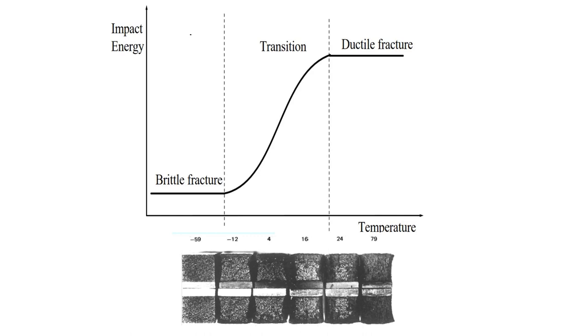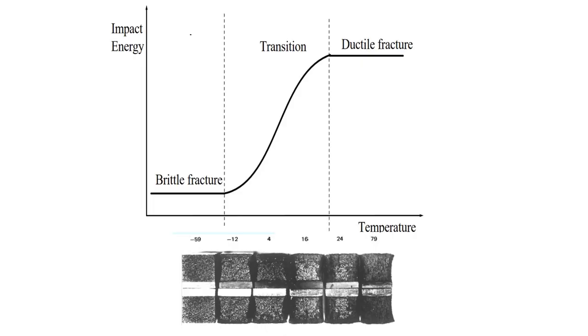For most carbon steels there is a strong dependency of fracture toughness on temperature. At high temperatures we get high toughness, and as we lower the temperature we go through a transition zone, reaching much reduced toughness at low temperatures as shown in the curve. Photos of the failure surfaces are also shown: at low temperatures we get brittle fracture with very little deformation and a crystalline appearance, while at high temperatures there is much more plastic tearing.